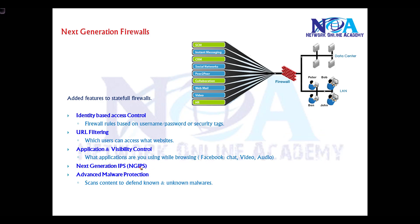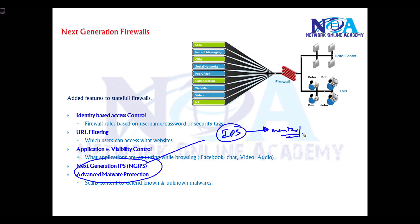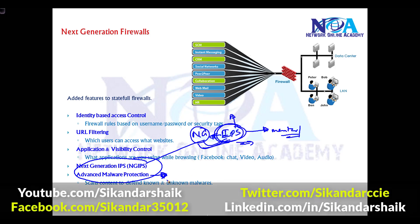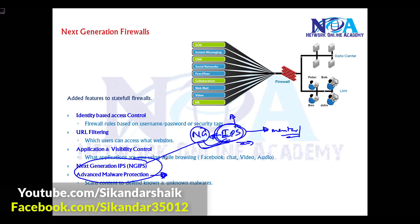Most next generation firewalls also support next generation IPS — Intrusion Prevention System. This is a device in the network that detects, monitors, and analyzes traffic, and takes action when it finds vulnerabilities or threats. Next generation IPS supports advanced malware protection and many additional features that previous IPS solutions did not support.